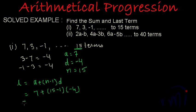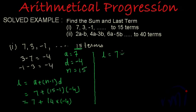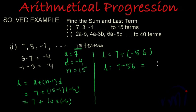This becomes 7 plus (15 minus 1) multiplied by minus 4, which is 7 plus 14 times minus 4. 14 multiplied by minus 4 is minus 56. So l equals 7 minus 56, which gives us minus 49. This is the last term.